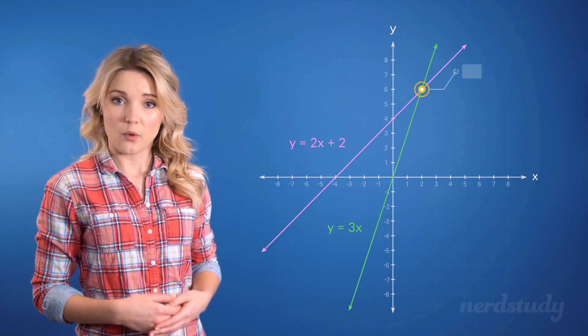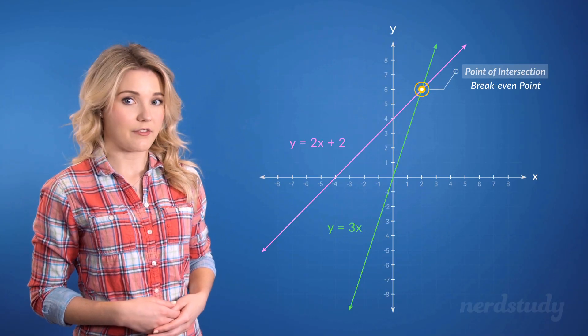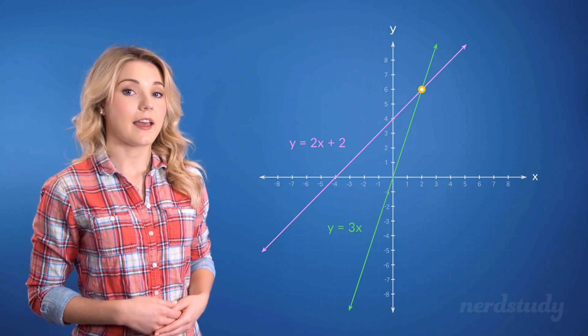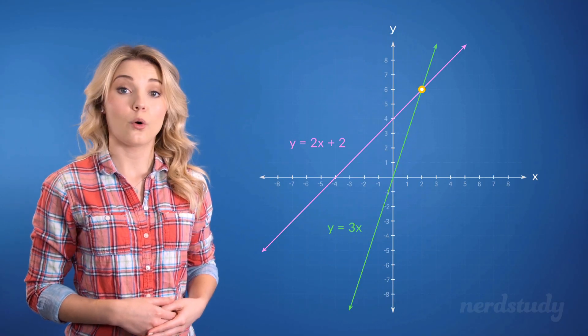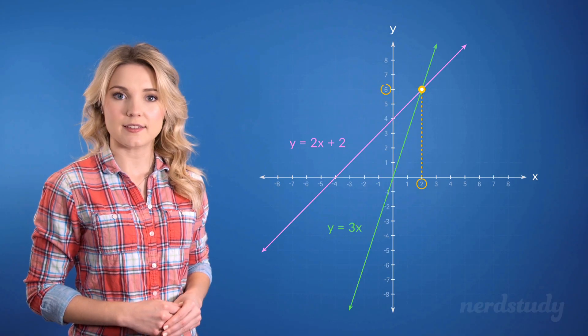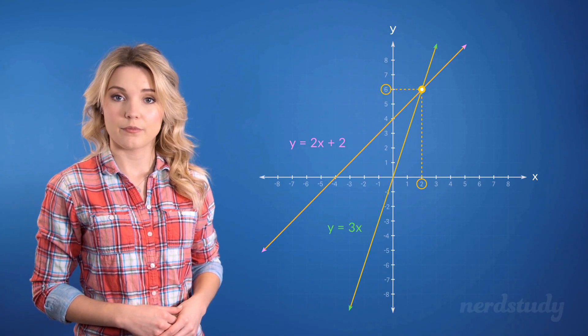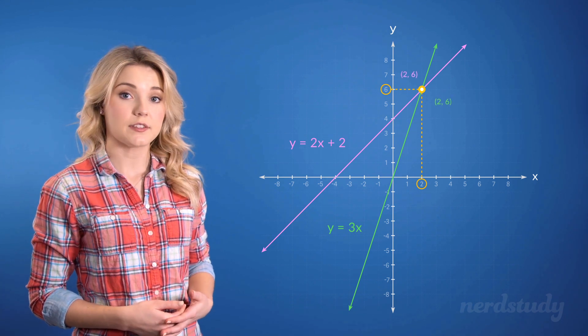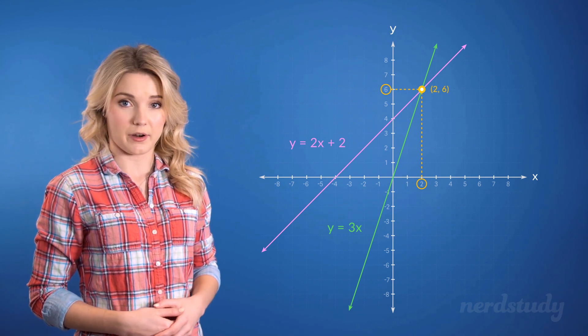We call this point a point of intersection or a break-even point. Now for these two lines we can see that at the point of intersection, or break-even point, when x is 2, y is 6 for both lines. So you can think of this point as the one point on the two graphs that share the same x, y coordinates.